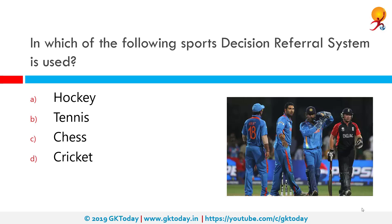In which of the following sports is the Decision Referral System used? The correct answer is cricket, popularly known as DRS. It is also called the Umpire Decision Review System and is a technology-based system used in cricket to assist match officials with their decision making. On-field umpires or even players may request a review from the third umpire.